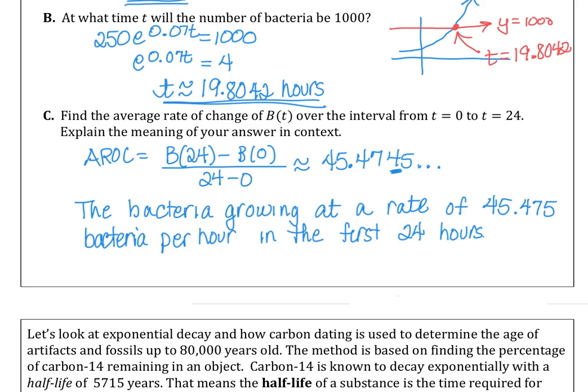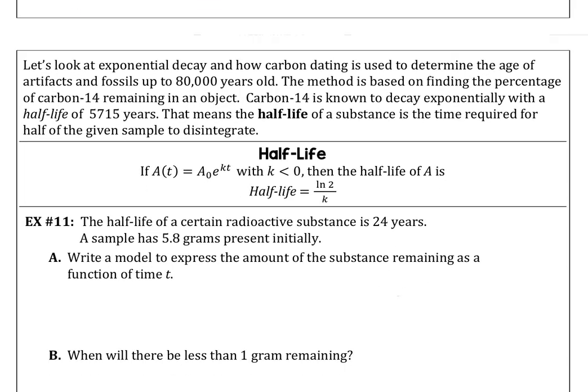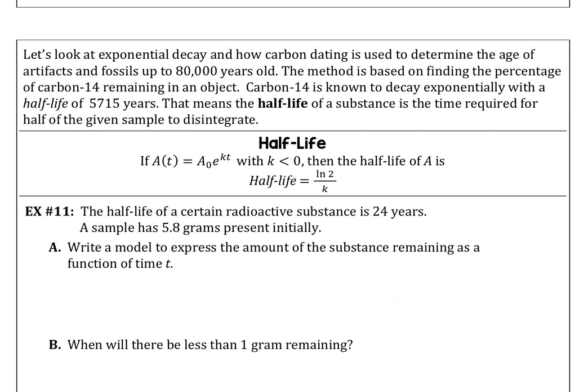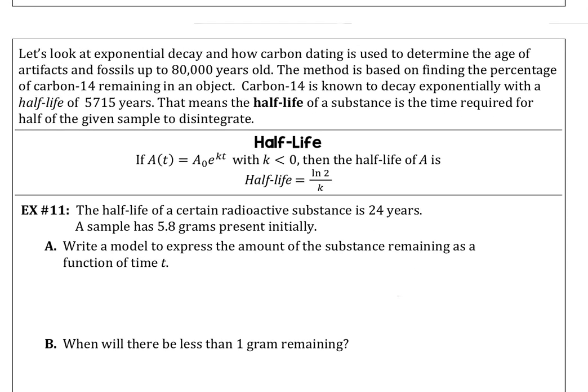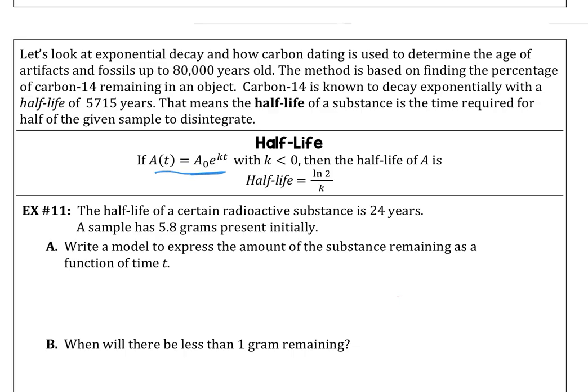In our very last example, we're going to look at exponential decay using this formula here. We want to have the half-life of a radioactive substance is 24 years. A sample has 5.8 grams present initially, so A_0 is 5.8. We want to write a function model.